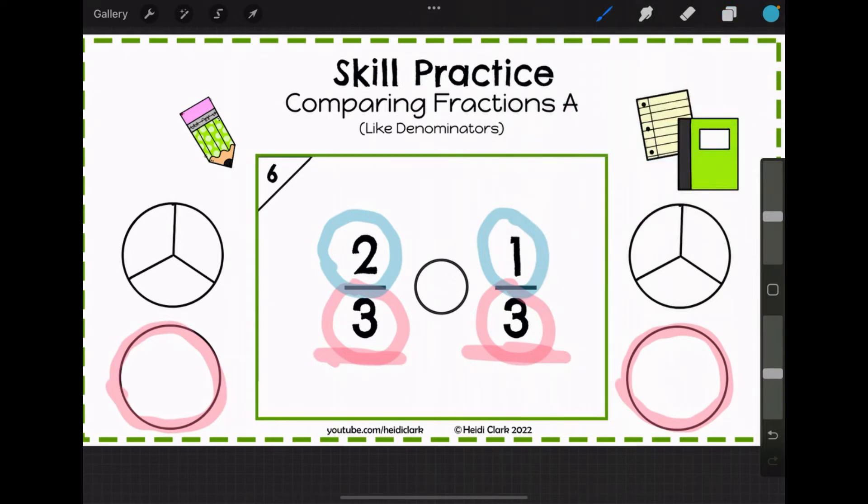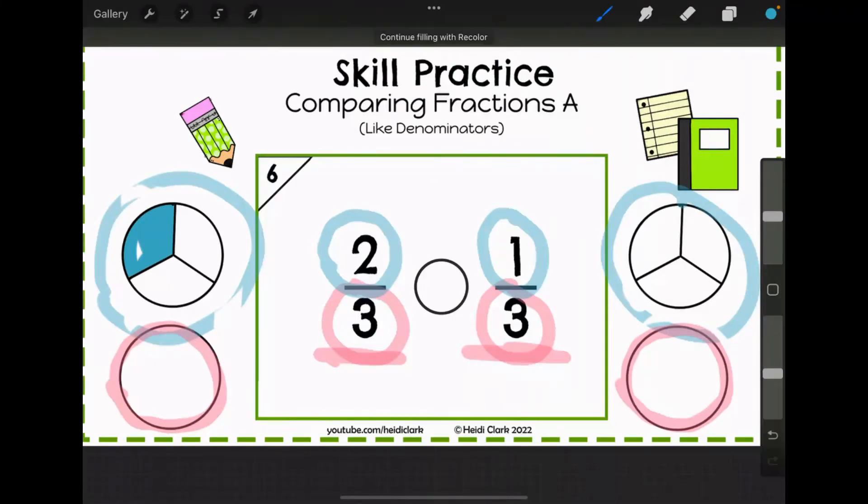So you can see with these two pizzas here, they got split up the same way, but you are going to get two pieces over here, and you're only going to get one piece over here, two thirds versus one third.